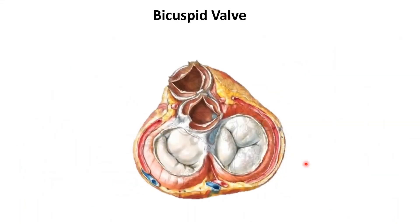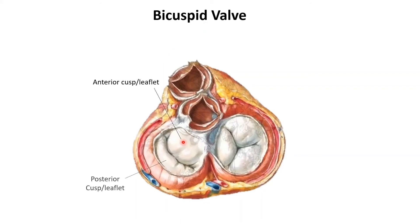Now let's have a closer look at the bicuspid valve. You can see there are two cusps — that's where it gets its name from: 'bi' meaning two, 'cuspid' meaning cusps. This is the anterior cusp and here we have the posterior cusp.